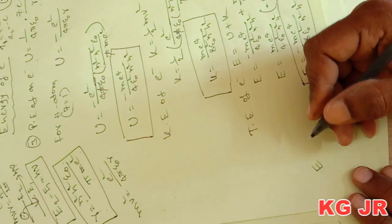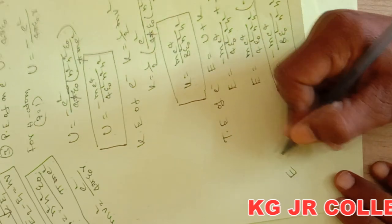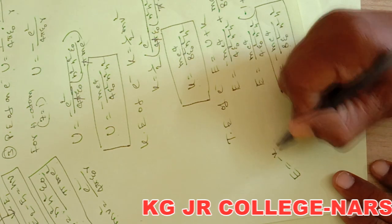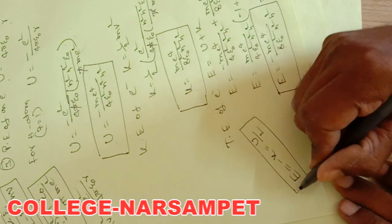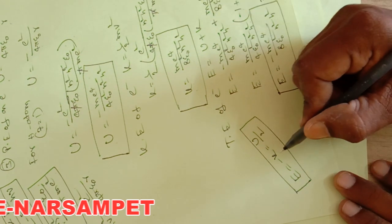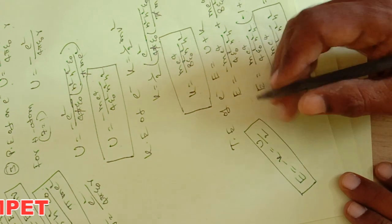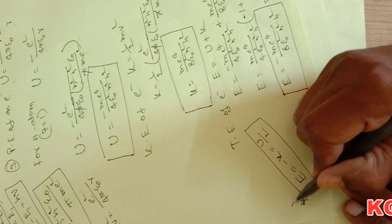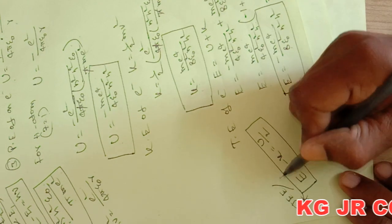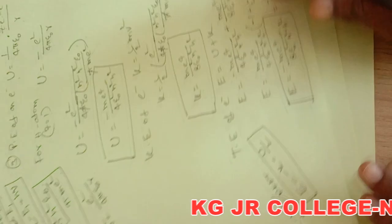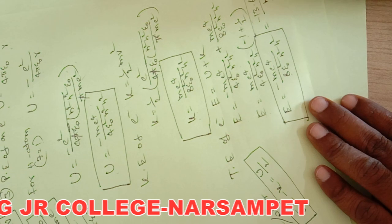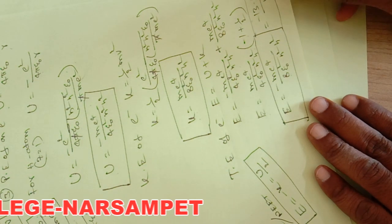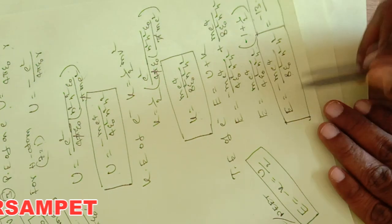An important relation: total energy E equals minus of kinetic energy, which equals half of potential energy. This is a very important relation for JEE or competitive exams. One question based on this formula — minus 13.6 Z² by n² electron volts for total energy of an electron — is compulsory in competitive exams.